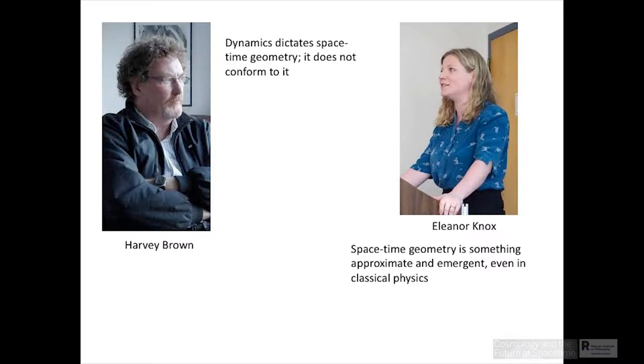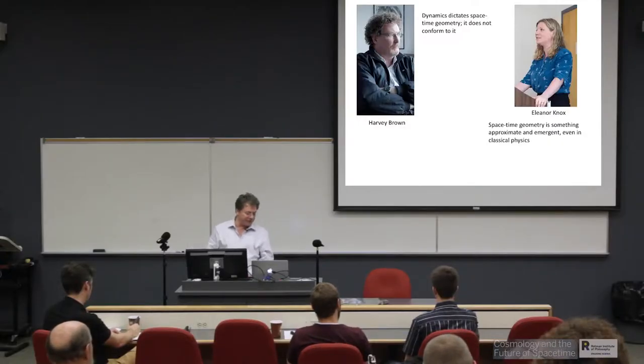Let me give a brief summary of their views. Broadly speaking, Harvey's view, I think, is that dynamics dictate space-time geometry and does not conform to it. Eleanor has, in particular, championed the view that space-time geometry is something approximate and emergent even in classical physics, in the context of non-relativistic physics.